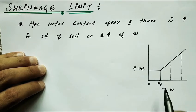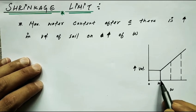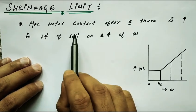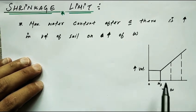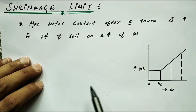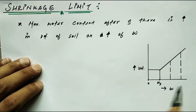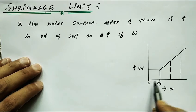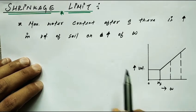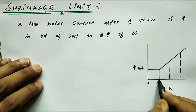When water content increases or goes beyond the shrinkage limit, there is an increase in volume of soil. This point is called the shrinkage limit and it represents that soil shows a change in volume after this point. So the clear conclusion is: up to the shrinkage limit there is no change in volume of soil.